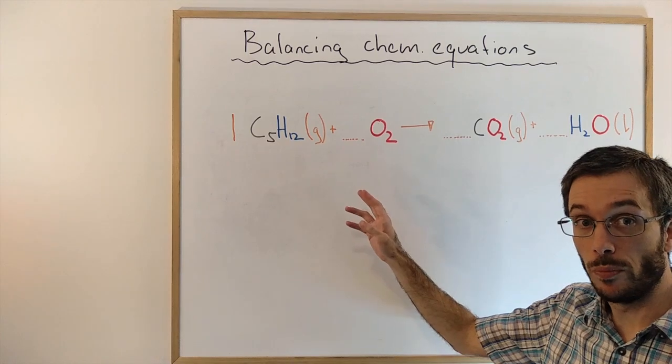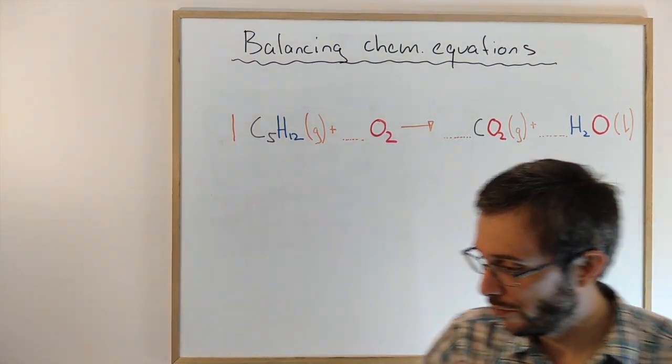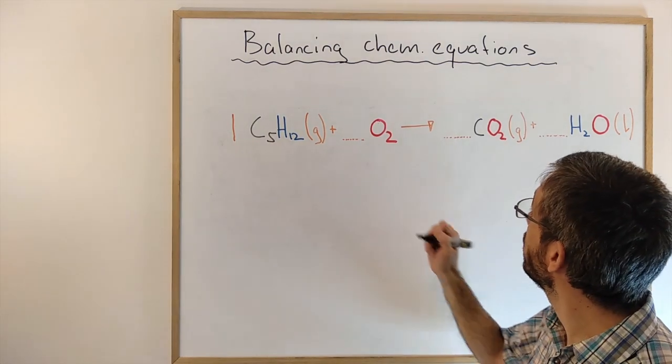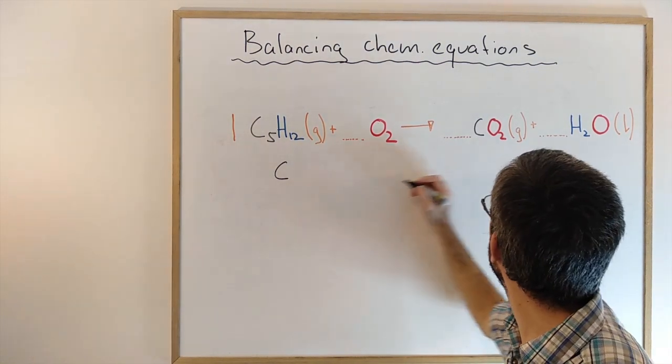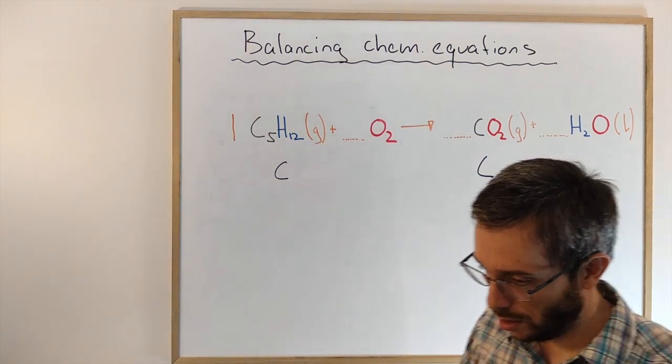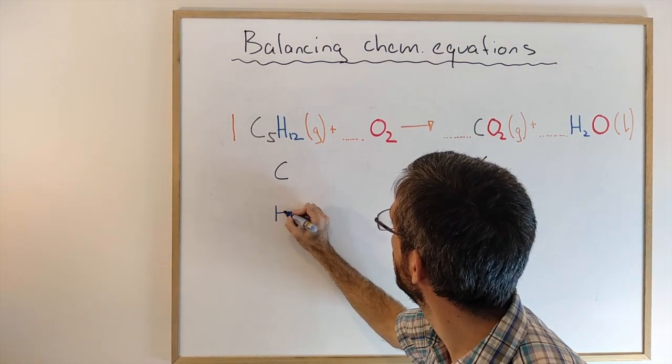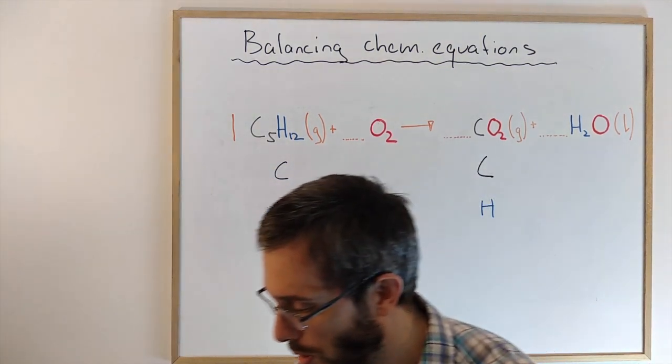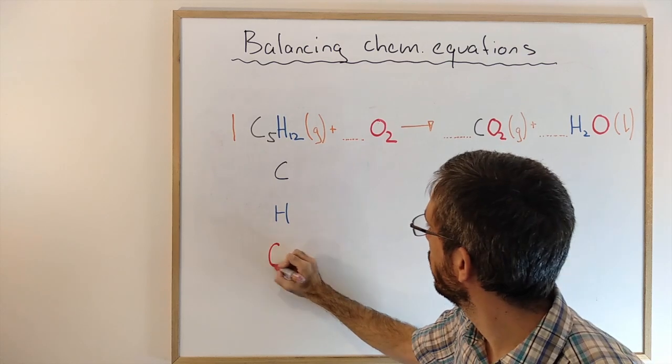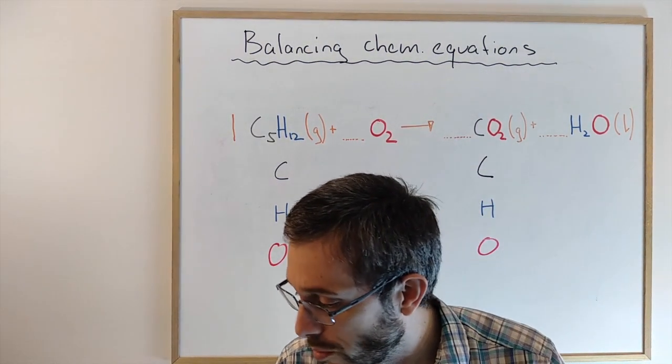The first one, if it's very simple, you can simply try out different combinations. What I like to do is the following: I like to write down how many atoms of carbon I have on the left and on the right, how much hydrogen I have on the left and on the right, and how much oxygen I have on the left and on the right. I'm going to start with my numbers.